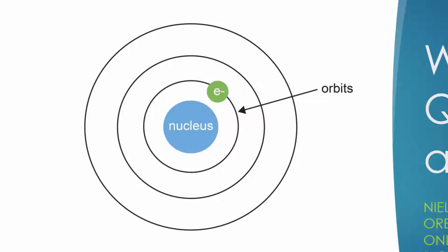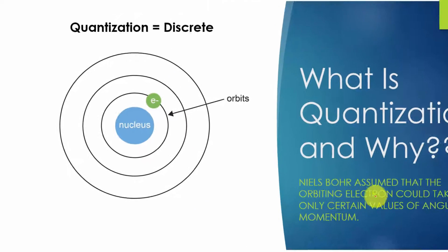But why? Why can't an electron just orbit in any way as it wants to? That's the topic of this video.